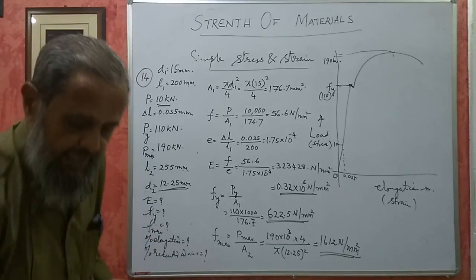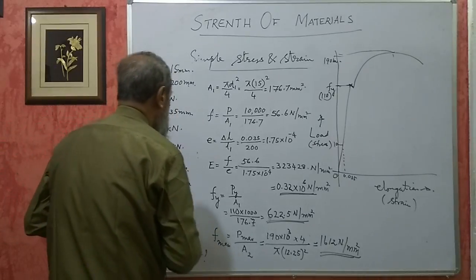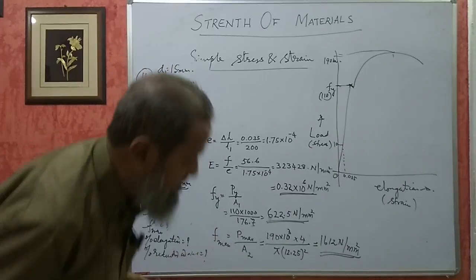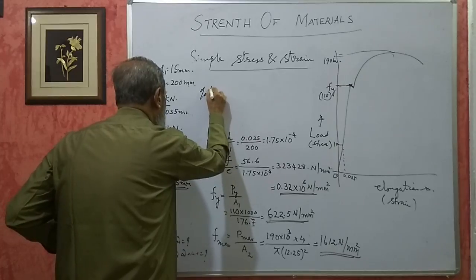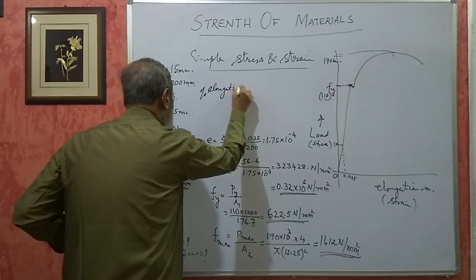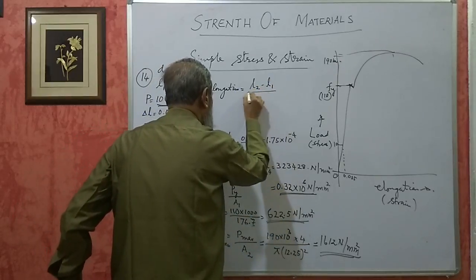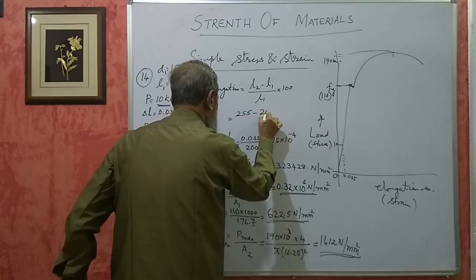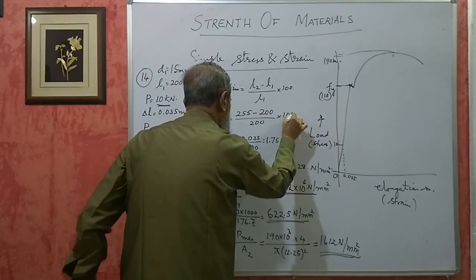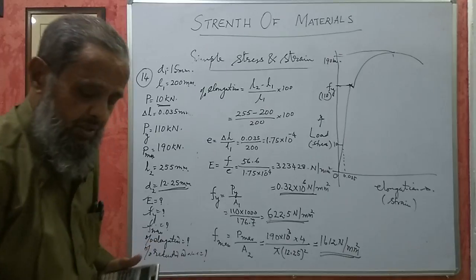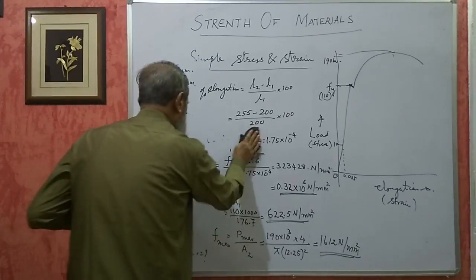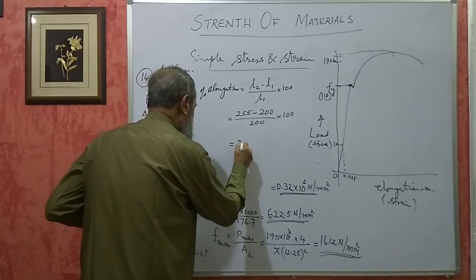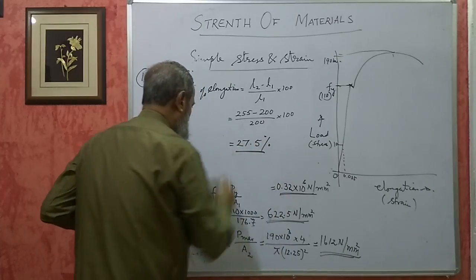Next, percentage elongation = (L2 − L1) / L1 × 100 = (255 − 200) / 200 × 100. This works out to 27.5 percent.